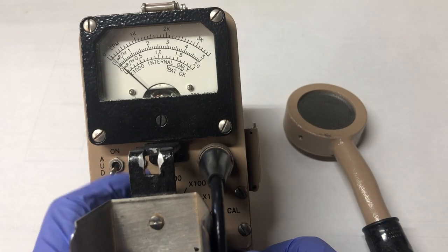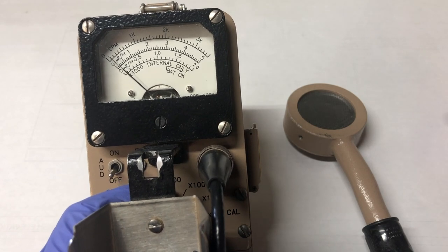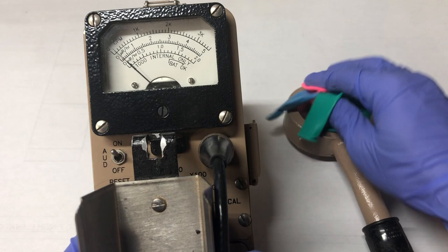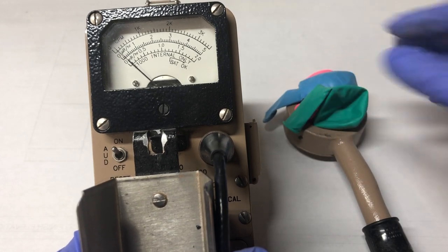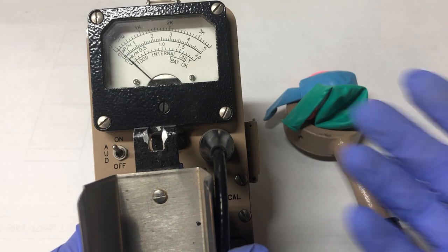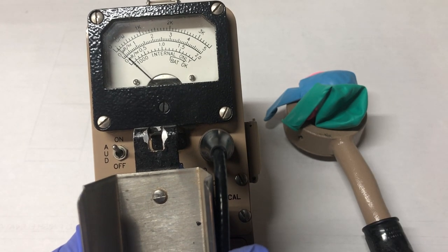Let's first begin by measuring the radiation on the balloons so we get our starting values. We're on times one setting and we can just set the balloons on top. They're nowhere near anything special, they're just around background, which is normal.